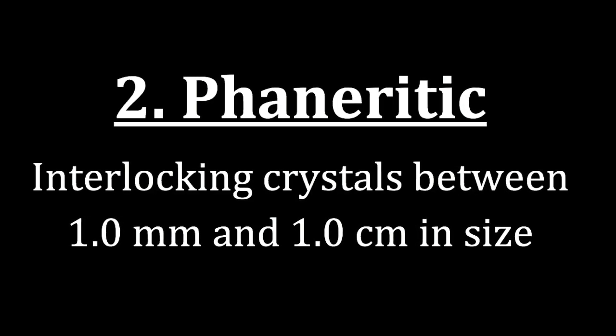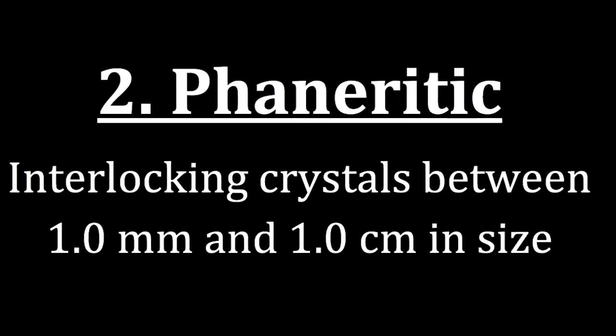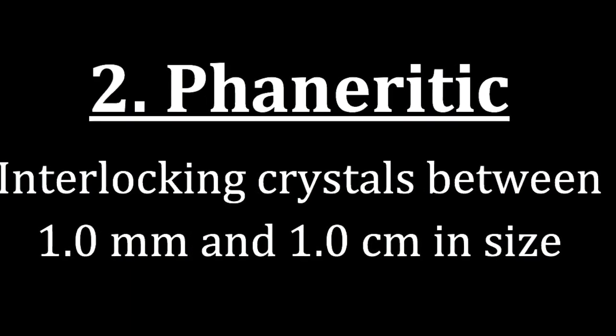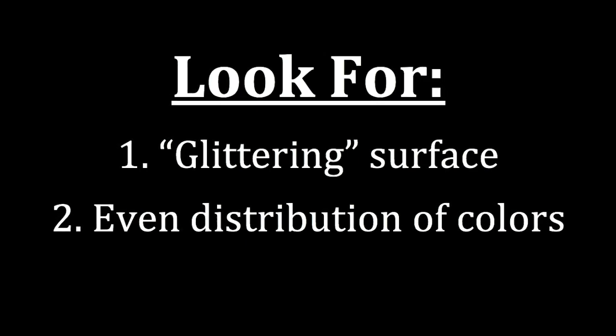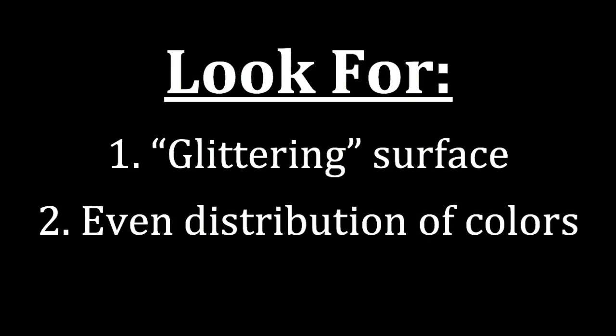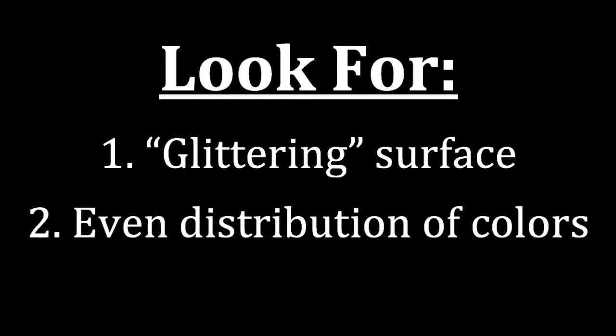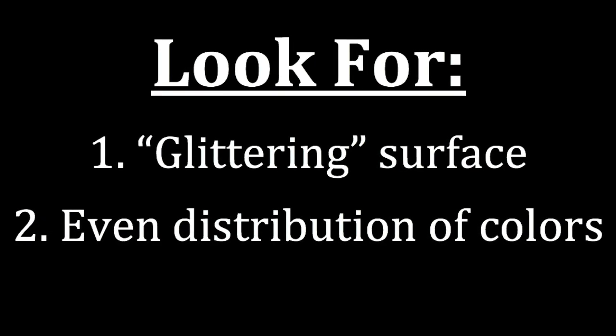The second texture is phaneritic. Here we're looking at interlocking crystals between one millimeter and one centimeter in size, meaning all the crystals that make up the rock are large enough to see with the naked eye — versus the pegmatitic texture with very large crystals. When looking at phaneritic rocks, we look for two things: glittering or light shining off the surface of the mineral, and an even distribution of colors across the crystals.